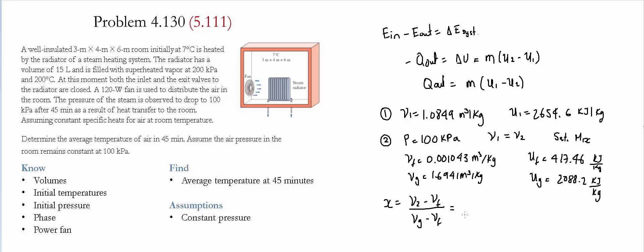Substituting the values, we find the quality x = 0.6376. Using the relation U2 = Uf + x(Ug − Uf), we find the specific internal energy at state 2 is equal to 1748.7 kJ/kg.